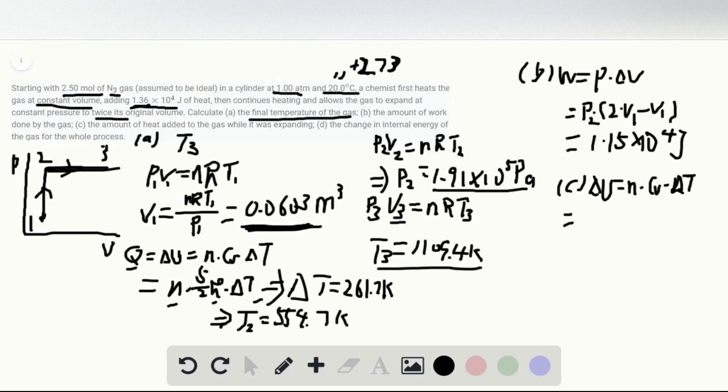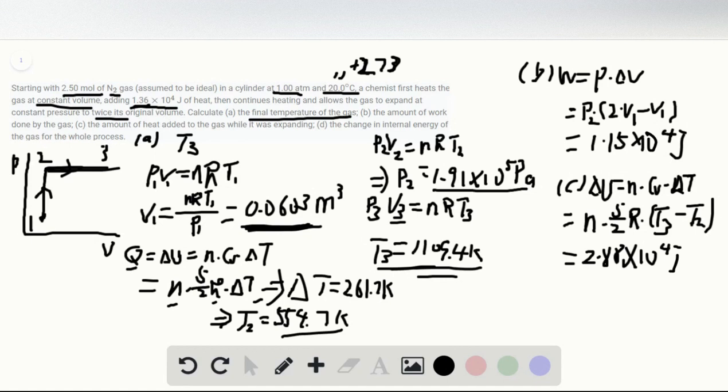n is given, and Cv is five halves times R. For delta T, we already have T3 and T2. Calculating this directly, delta U is 2.88 times 10 to the fourth joules.